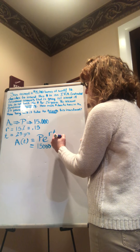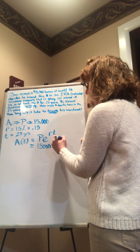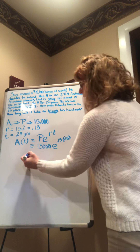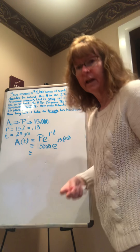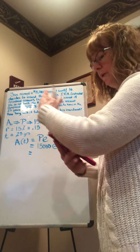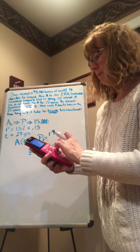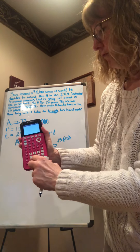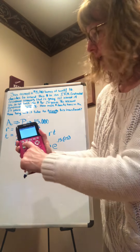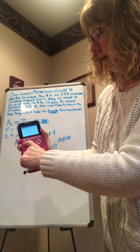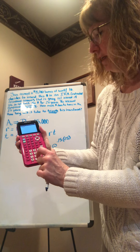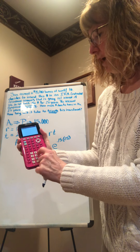Sam received a $15,000 bonus at work. He decides to invest this money in an IRA, which is an individual retirement account, that is giving 15% interest if you do not touch the money for 25 years. The account compounds continuously. How much money does he have in the account in 25 years? How long will it take to triple his investment?